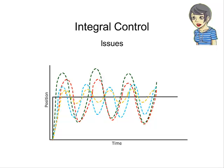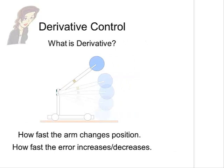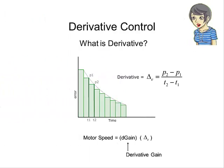The last element of PID is derivative control. Well, what is derivative? In context of the robot arm, the derivative would measure how fast the arm changes position, or how fast the error increases or decreases. Simply put, a derivative measures the rate of change of a function. In this case, the function describes the position of the arm. Determining the derivative requires some knowledge of calculus, but we can simplify the calculation by approximating. Here's how to do it.